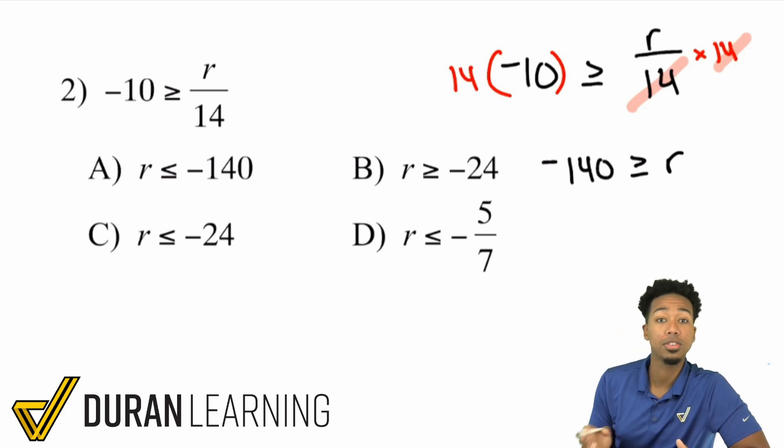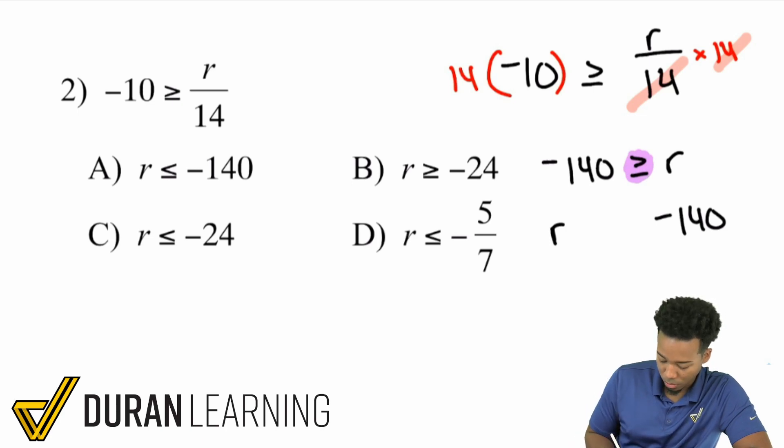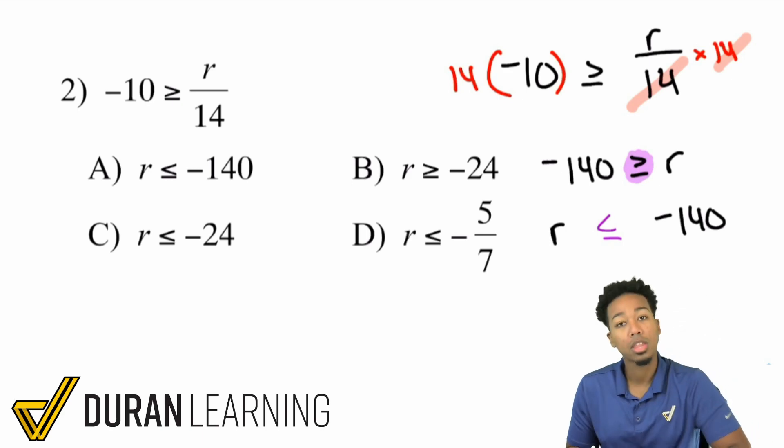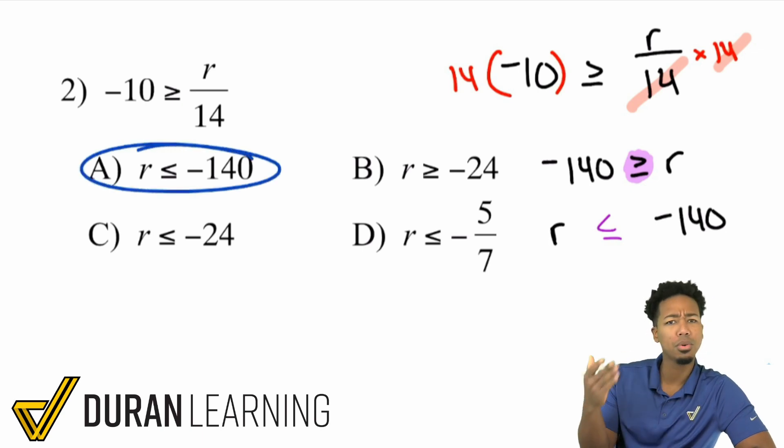Well, what we're going to do is we're going to flip the sides. And you're perfectly allowed to do that. But remember this rule here. If you flip the sides, if you put the r here and the negative 140 there, if you flip the sides, you have to flip the inequality symbol. So instead of greater than or equal to, we have less than or equal to. Now the reason that that works is because think of it like this. If I go ahead and say, and again, the answer is going to be A, but let me kind of go through this with you.